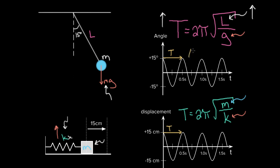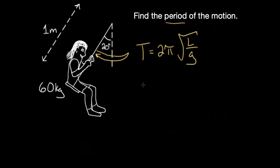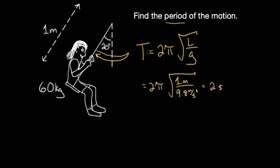Let's try a sample problem. You're 60 kilograms at the park, your friend pulls you back 20 degrees on a swing that is one meter in length — find the period of the motion. Using the period formula T = 2π√(L/G), we plug in L = 1 meter and G = 9.8 m/s² on Earth. Solving gives a period of about two seconds exactly, so this swing would have a period of about two seconds.